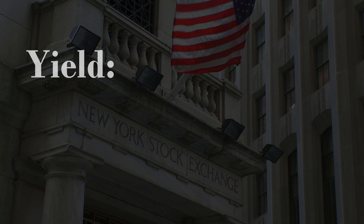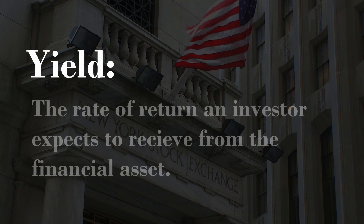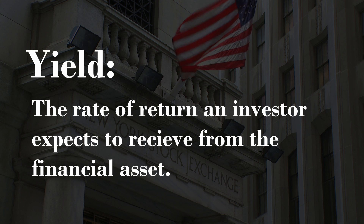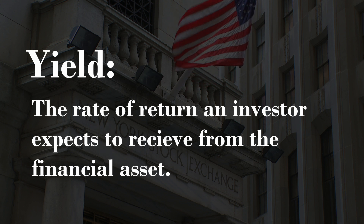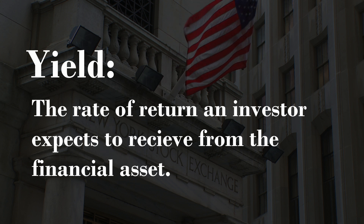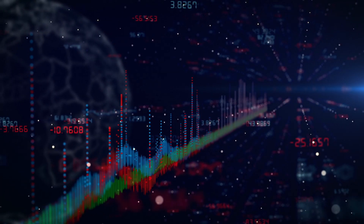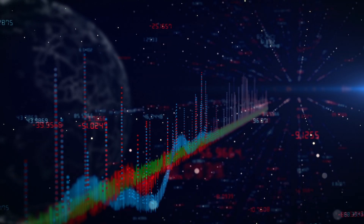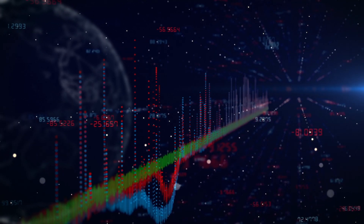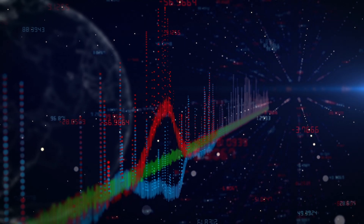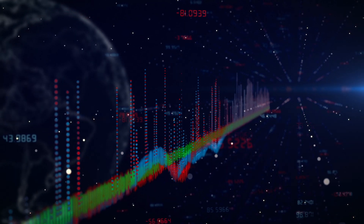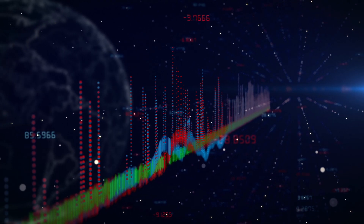First, we should define what a yield is. The yield is essentially the rate of return an investor expects to receive from a financial asset. Typically, the financial asset is a bond. For example, a 5% yield means the bond would give you a 5% return per year until the last year when the bond is fully repaid by the issuer.